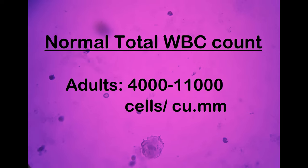Normal total WBC count in an adult ranges from 4,000 to 11,000 cells per cubic millimeter.